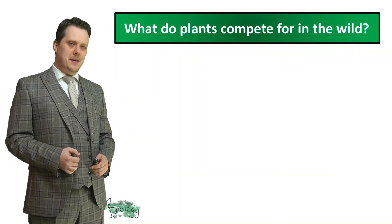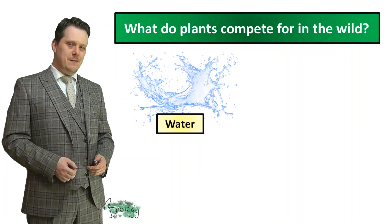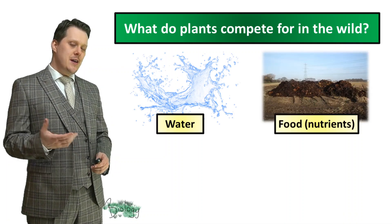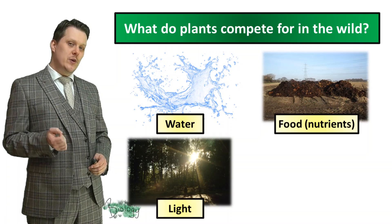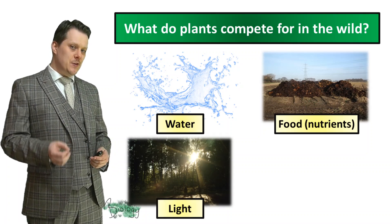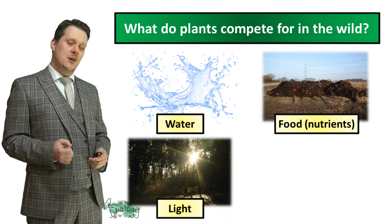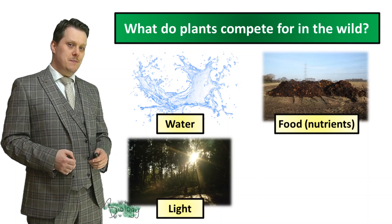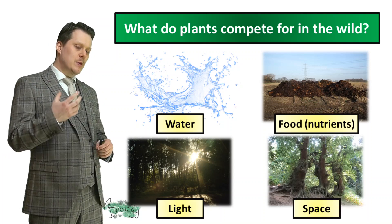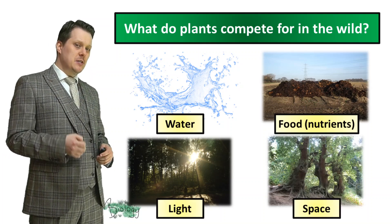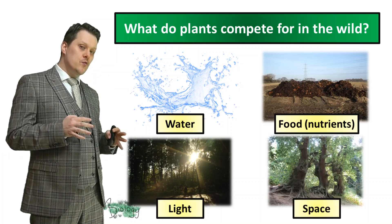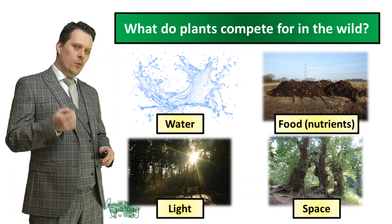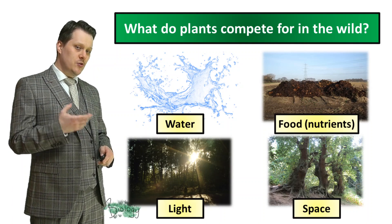So what do plants compete for? They also compete for water and for food or nutrients. They compete for light, which they need for photosynthesis — a reaction that occurs in the leaves which allows the plant to make its own glucose. They also compete for space, and when we talk about space, we tend to be talking about the space that the roots grow into, because the more space your roots occupy, the more water and nutrients you can absorb.